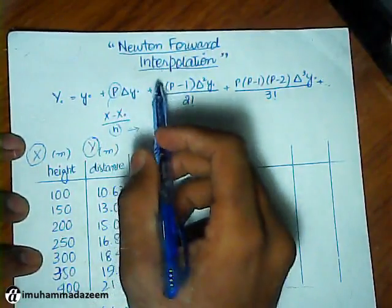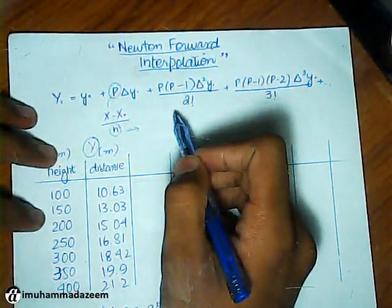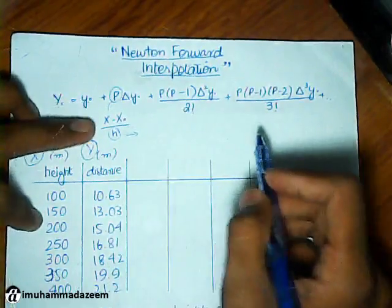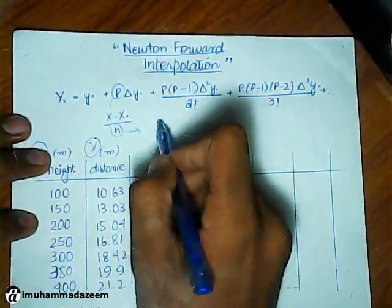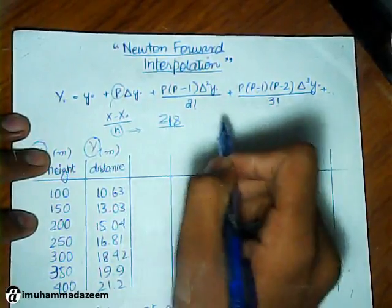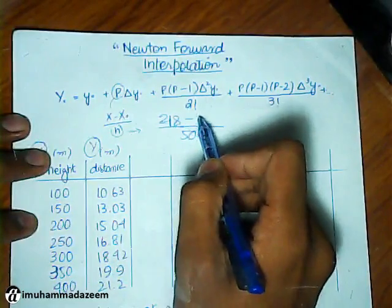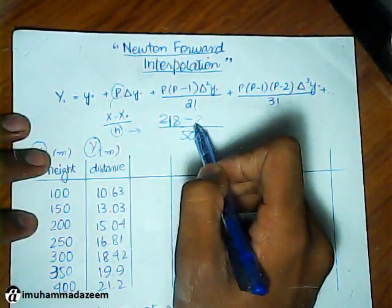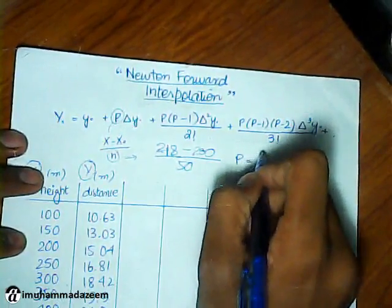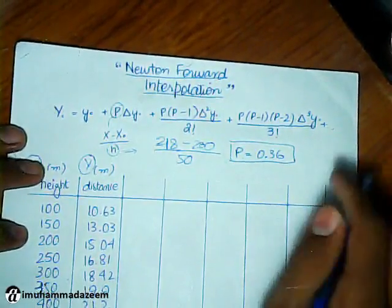P for this set of data is going to be, if we take this one here, X is going to be what we are going to find out. P equals 0.36.